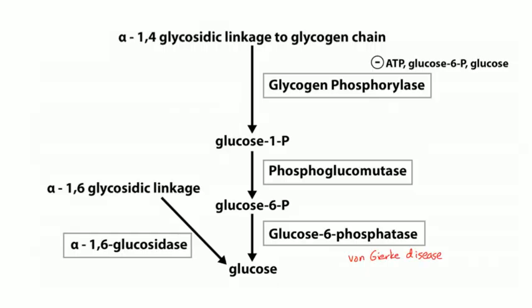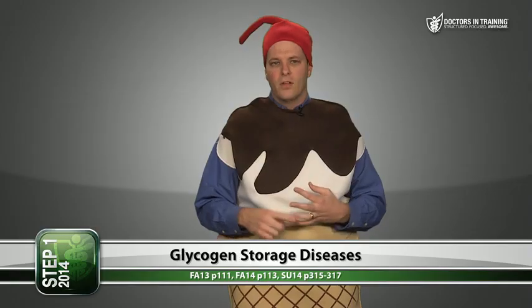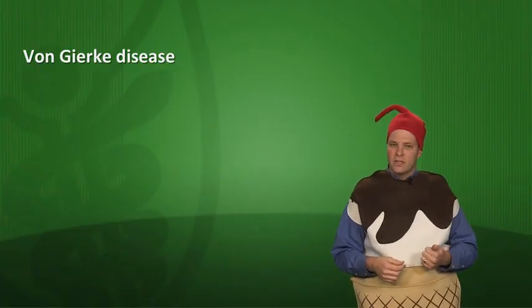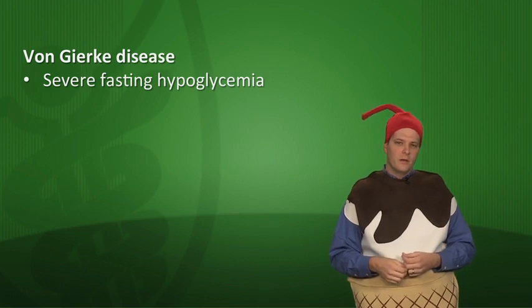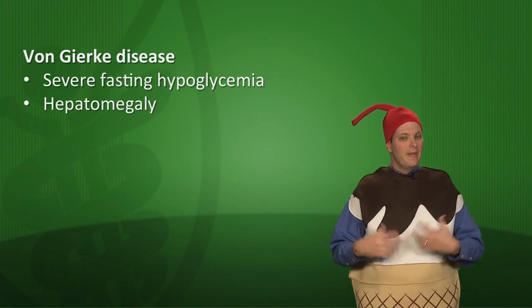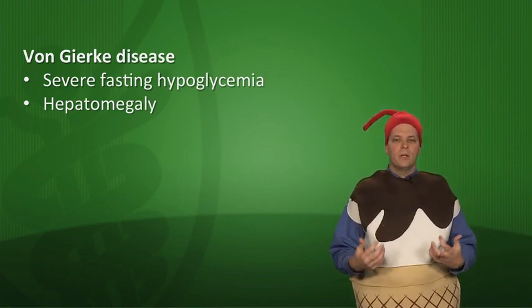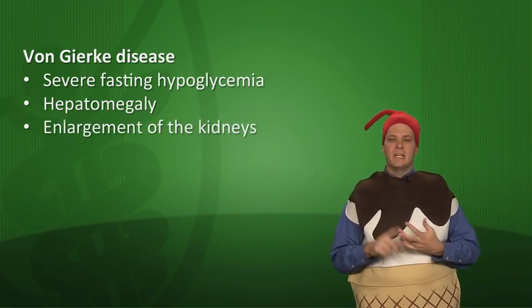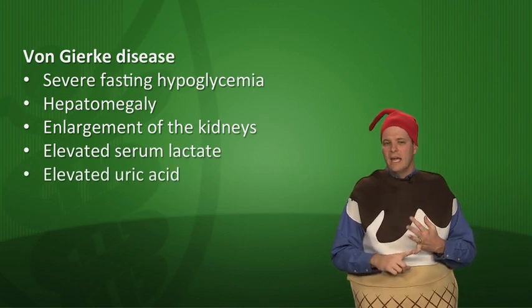Von Gierke disease, glycogen storage disease type 1, is a deficiency of glucose-6-phosphatase — the enzyme at the final step of both glycogenolysis and gluconeogenesis — in glucose-sharing tissues like the liver, enterocytes, and kidney. These tissues can't share glucose, so patients have severe fasting hypoglycemia. They also have buildup of glycogen in the liver causing hepatomegaly, enlarged kidneys, elevated serum lactate, elevated uric acid, and hypertriglyceridemia.